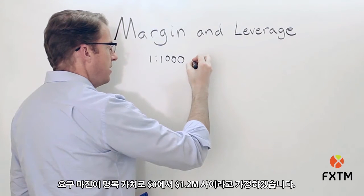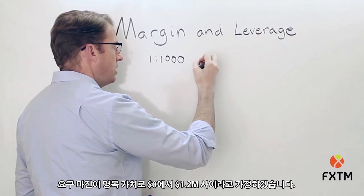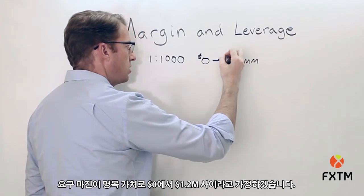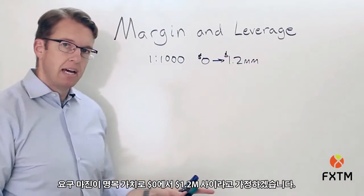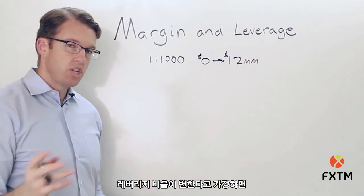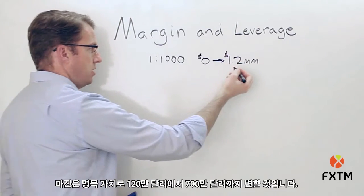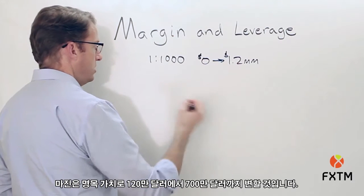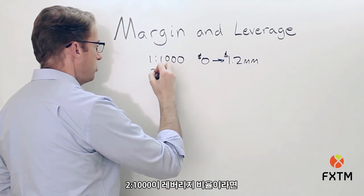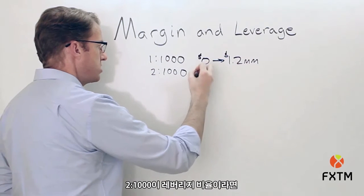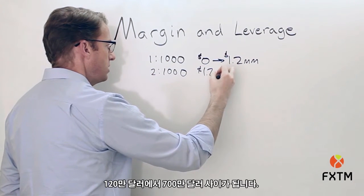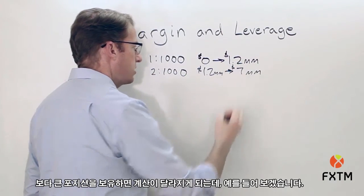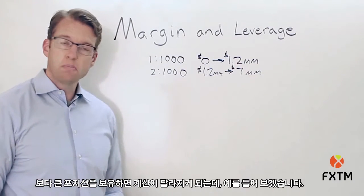Let's assume that the margin requirement based on a leverage ratio of 1 to 1,000 applies for notional values from zero up to $1.2 million. Then the leverage ratio changes: for notional values from $1.2 million up to $7 million, the leverage ratio becomes 2 to 1,000. That's going to change our calculation if a trader is holding open a larger position.